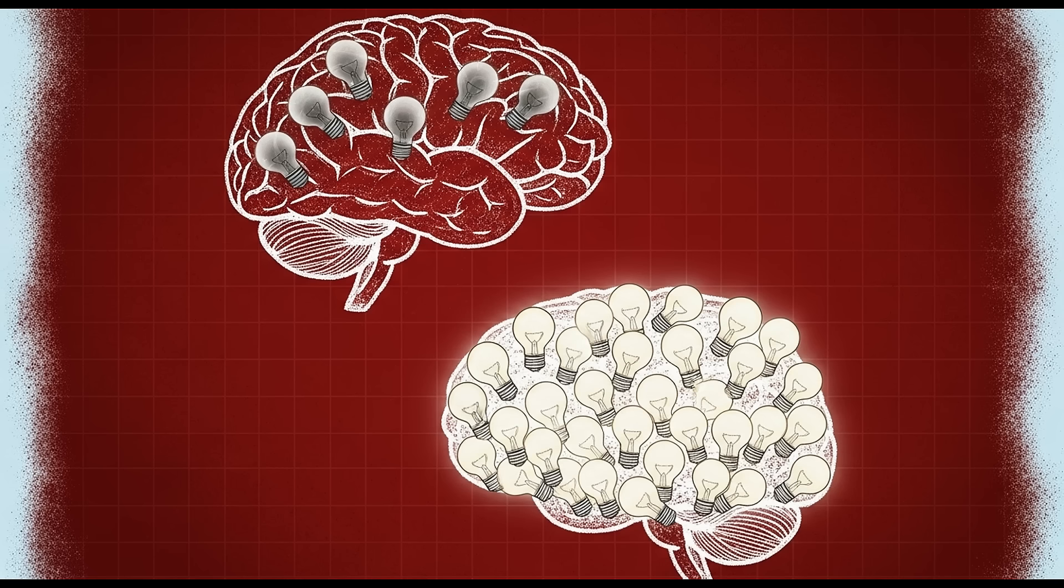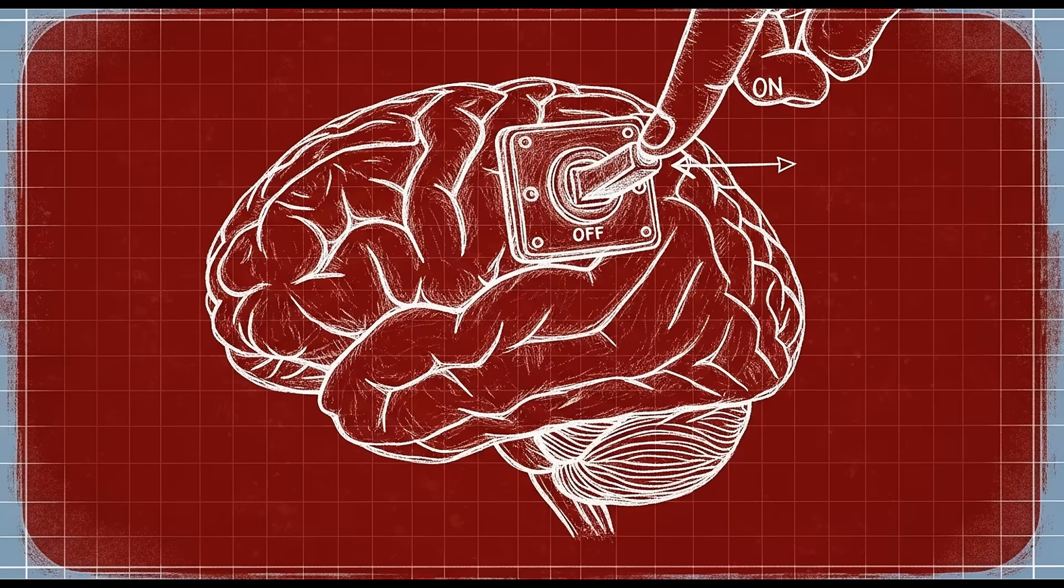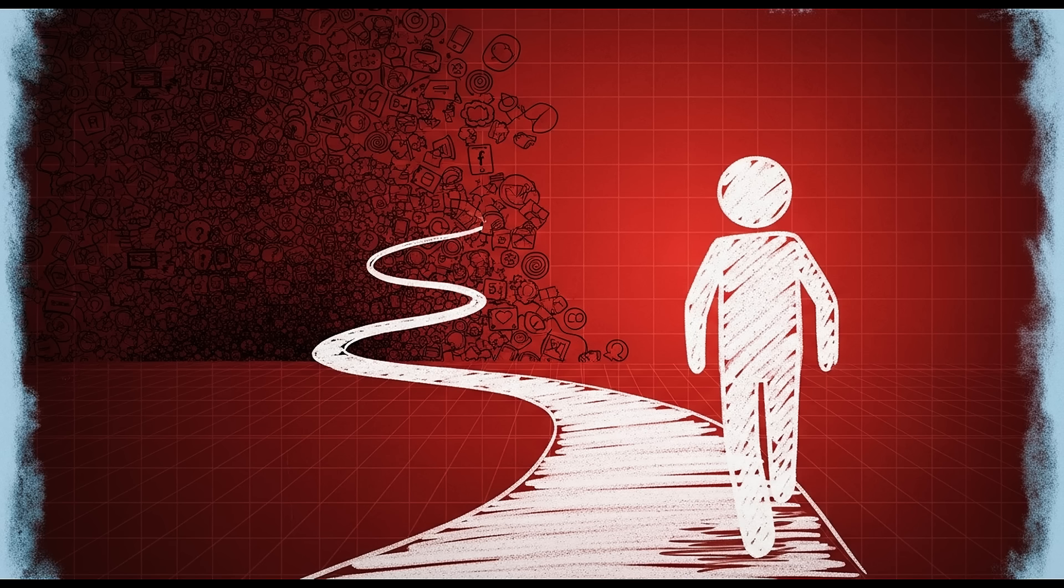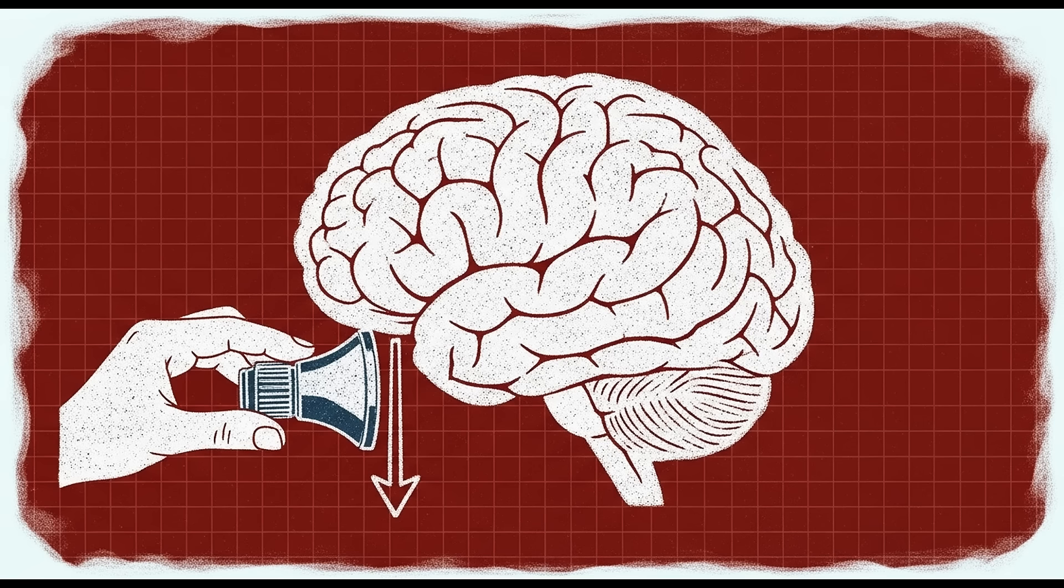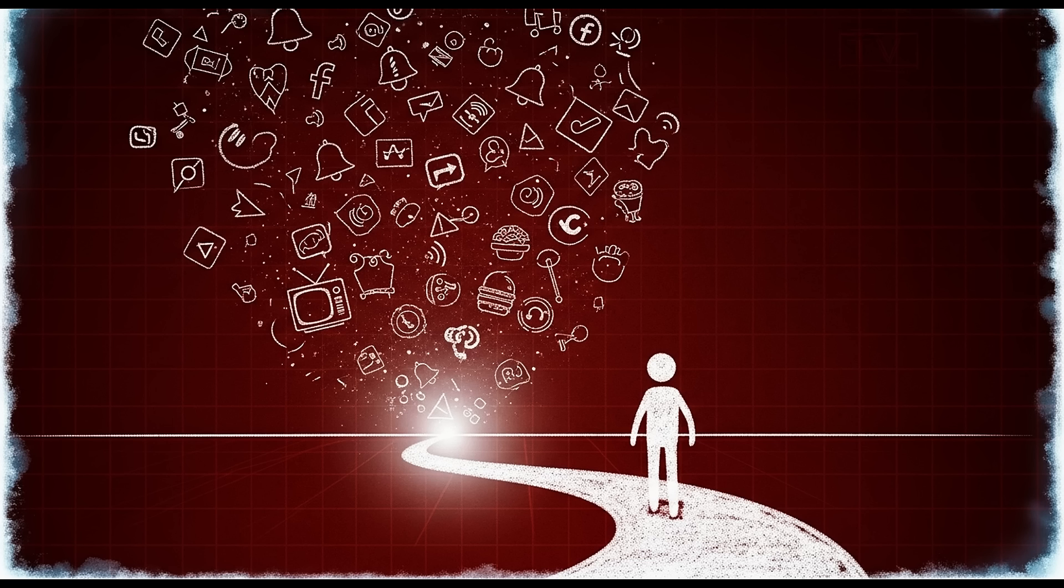These activities feel boring at first because your dopamine system is still tuned to high intensity. But here's the magic. As you persist, your brain starts releasing dopamine in anticipation of these activities too. After a few days of reading, your brain learns that opening a book leads to the satisfaction of learning something new. After a week of workouts, your brain starts craving the endorphin rush and sense of accomplishment. You're literally retraining your reward system.